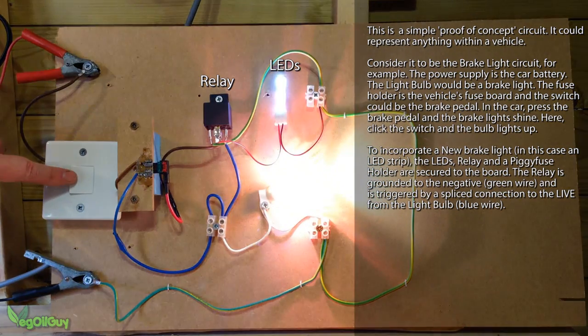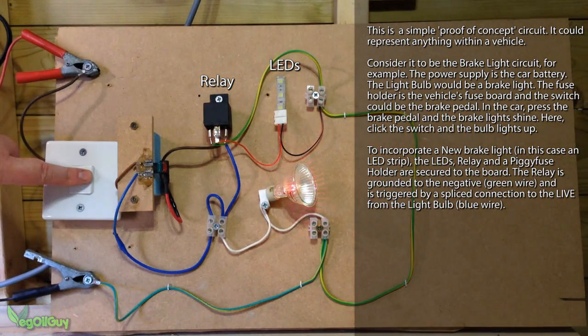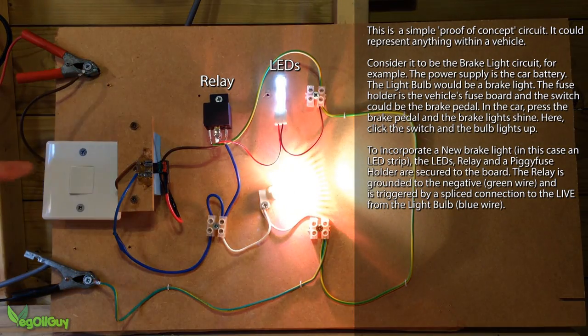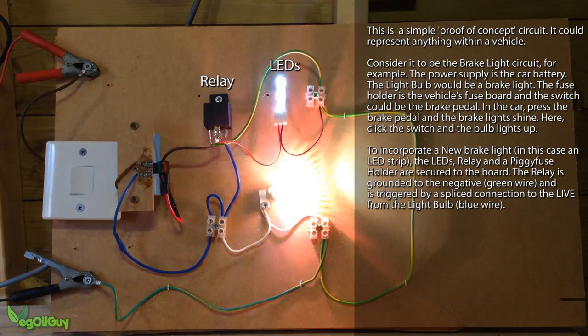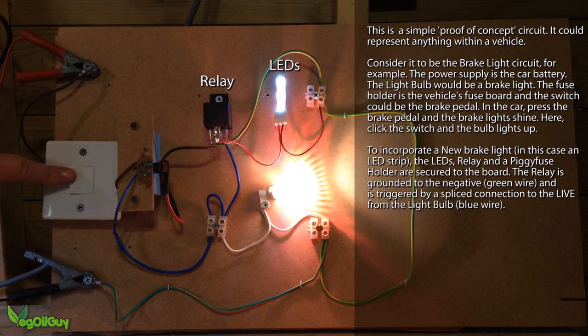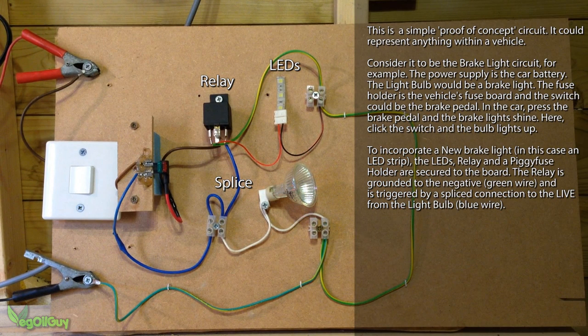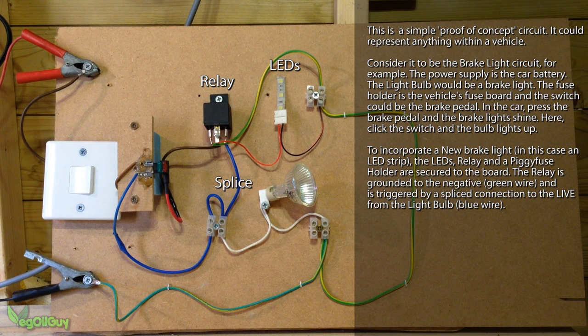And now let's also plug in the original fuse into the piggyback. Now everything works. The original circuit is still fused and completely intact. The new circuit has a separate fuse. A separate supply and is powered through the relay. And the relay is energised by a splice from the original parent circuit. The blue wire that you can see coming up from the white connector block there.